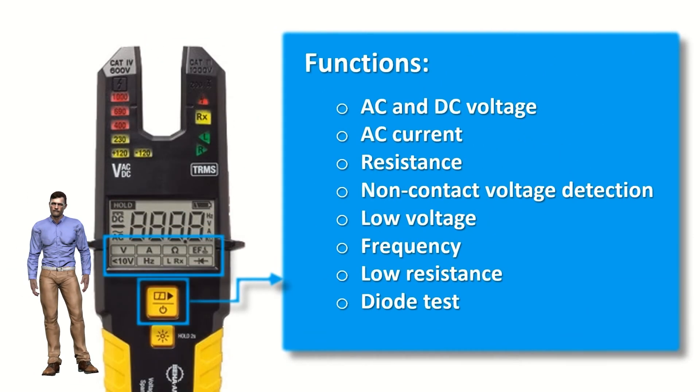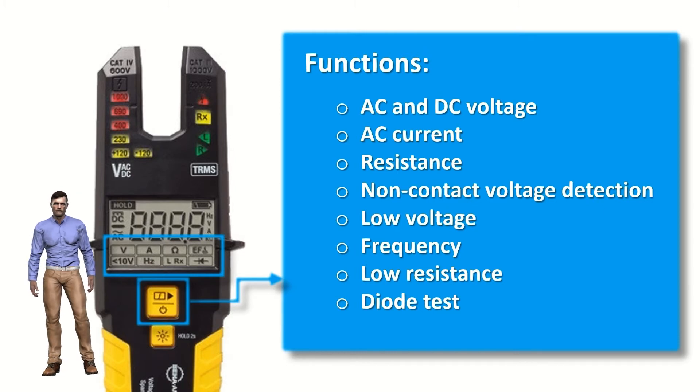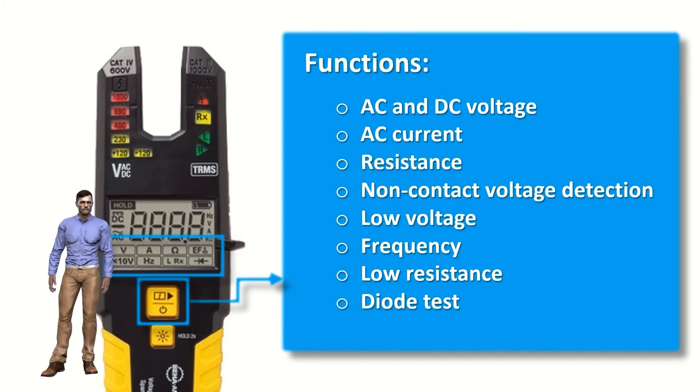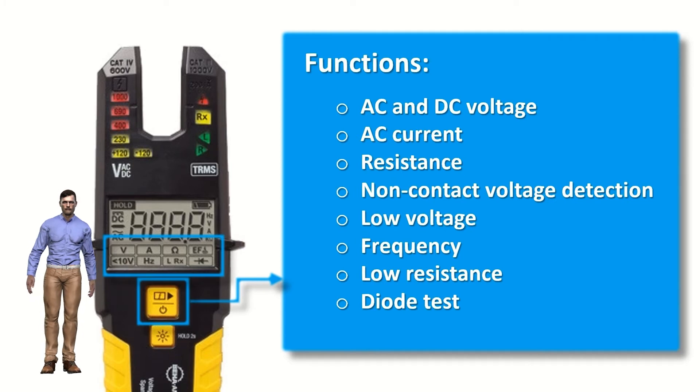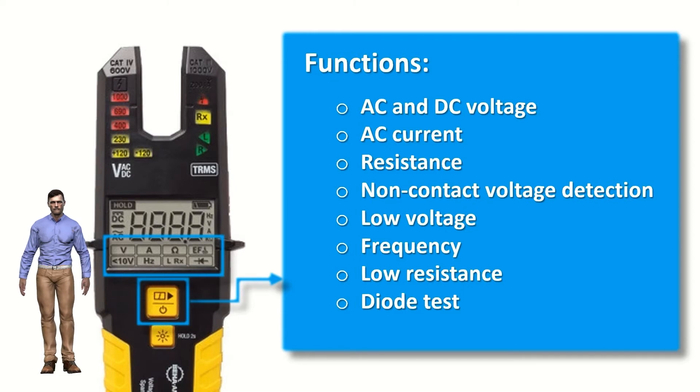Now that we have seen the physical aspects of this voltage and current meter, we can move on to see all its measurement and test functions. As I have already mentioned, with just one button we can select between the following functions: measurement of AC and DC voltages, AC current, resistance, non-contact voltage detection, measurement of small voltages, frequency, small resistances and finally diode test.